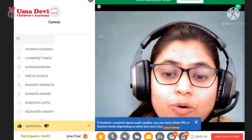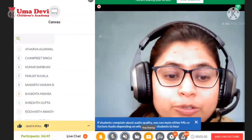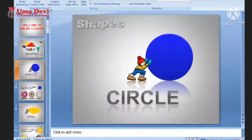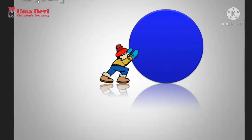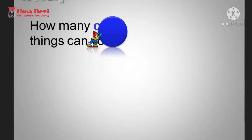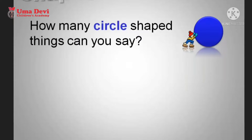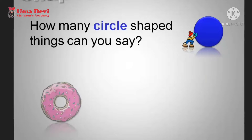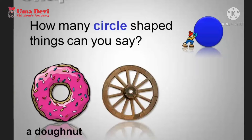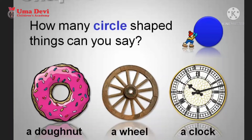Let's see how we are going to learn different types of shapes. Tell me, which is a circle shape? Yes, this is a circle. How many circle-shaped things can you say? Donut, a wheel, a clock.